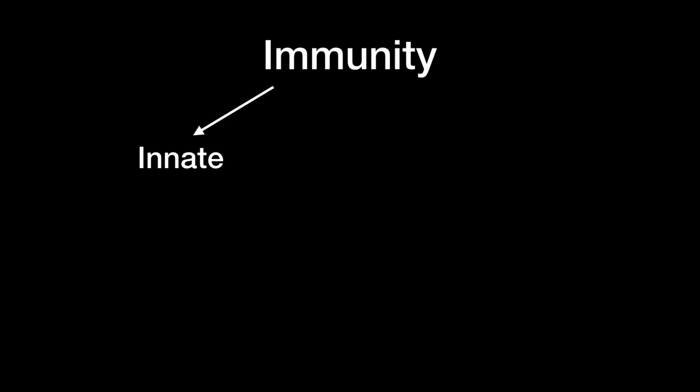Hello and welcome to another video. This video is mainly going to be about the innate immune system. Your immune system uses two main strategies to defeat any type of unwanted invaders. One of the strategies is called the innate immune system and the other one is called the acquired immune system.